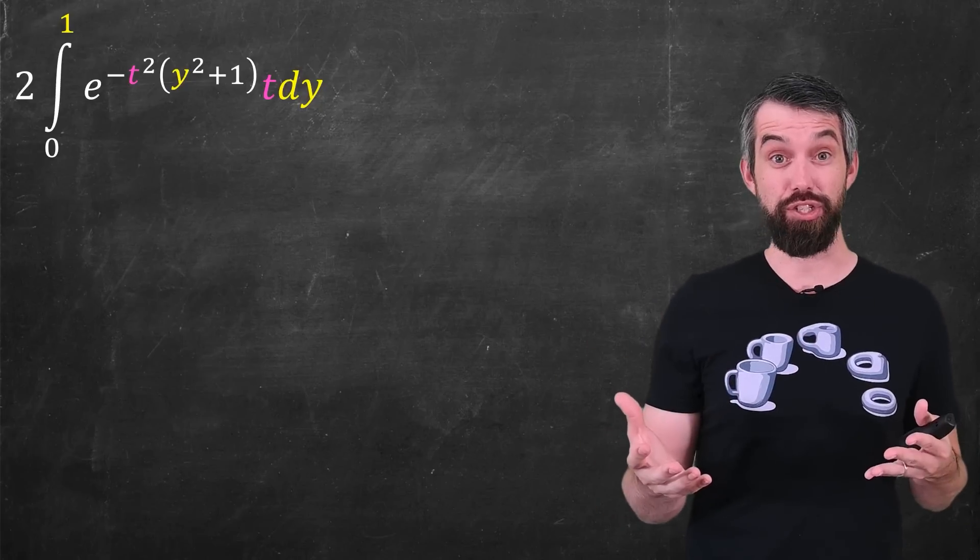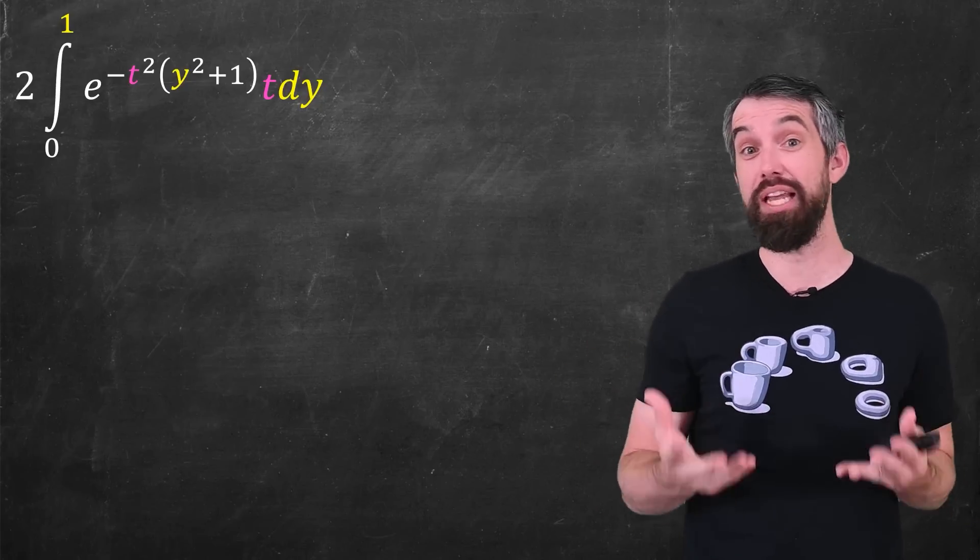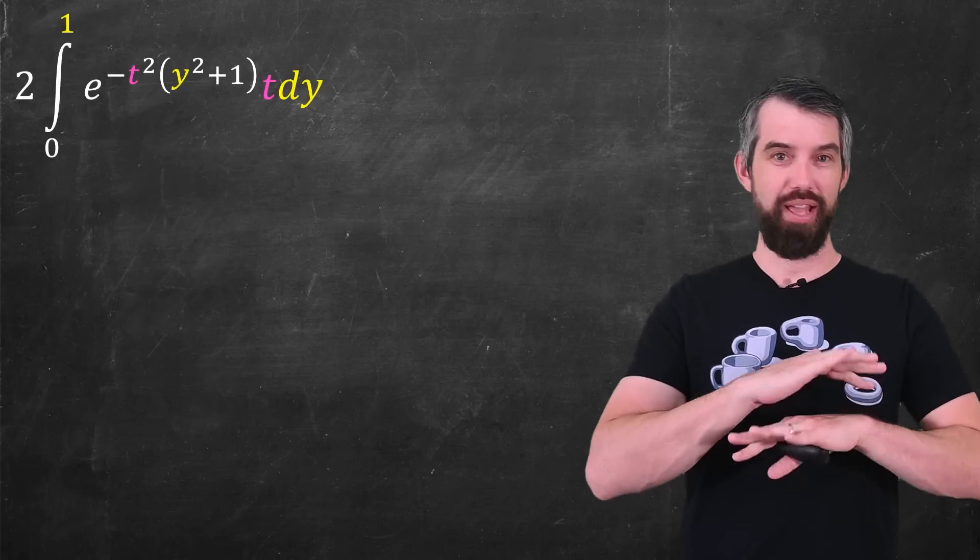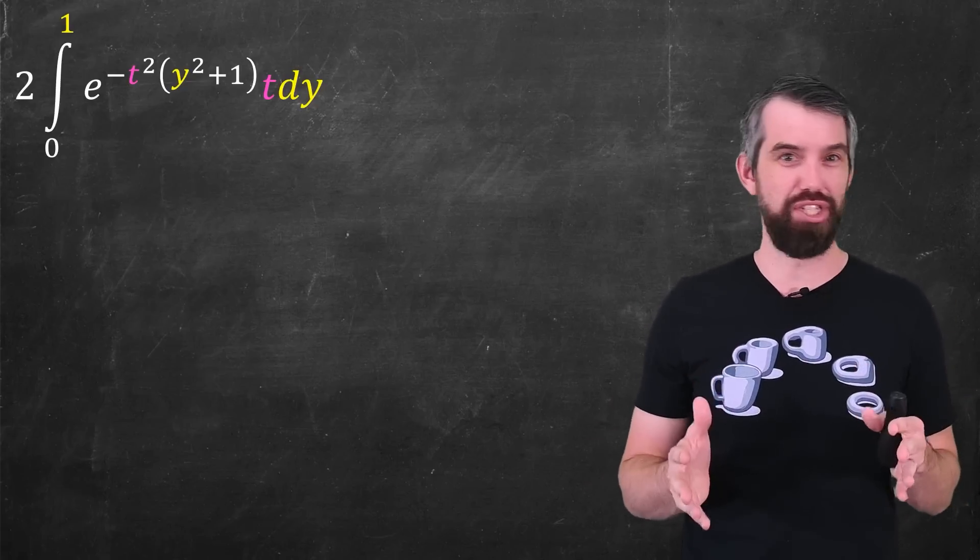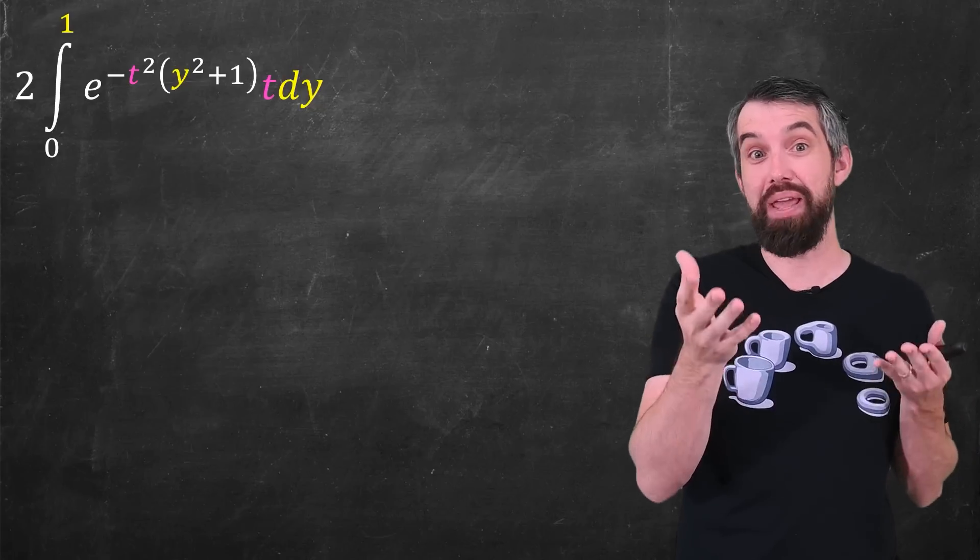Now, I still don't know how to integrate this function. Note the t doesn't help us to do like a u substitution because I'm doing an integral with respect to y. So ignoring the t parts, which are constant, it's just sort of like an e to the minus y squared, which, you know, that's what we had at the beginning. We haven't helped ourselves.